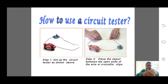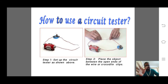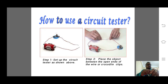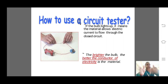We can use a circuit tester as shown in the setup. Step one: connect the battery, bulb, and wires separately. Then, whatever object you want to test, place that object at the end of the wire. You can place the object between the open ends of the wire, or use the crocodile clips, and you can check whether it conducts electricity or not.